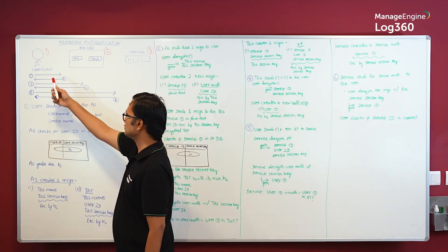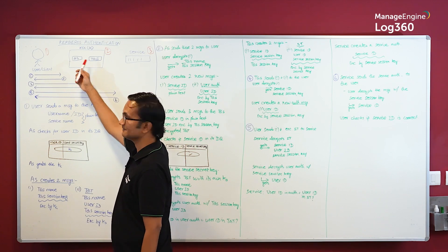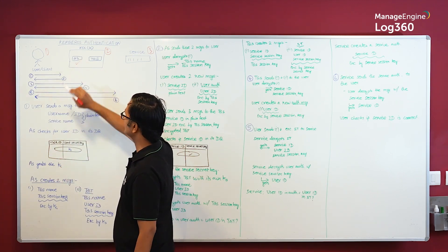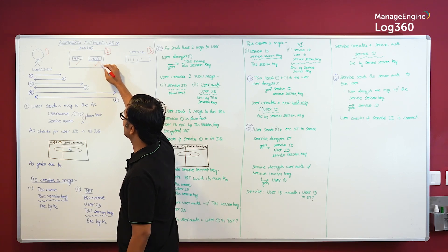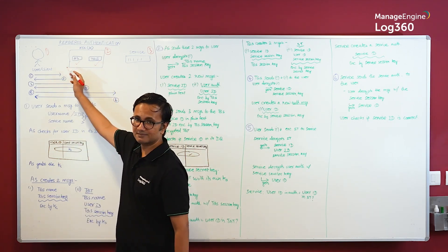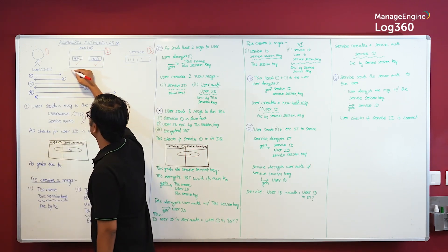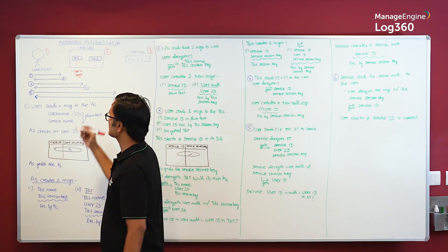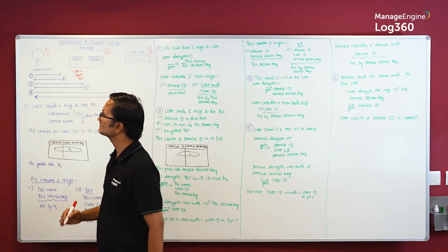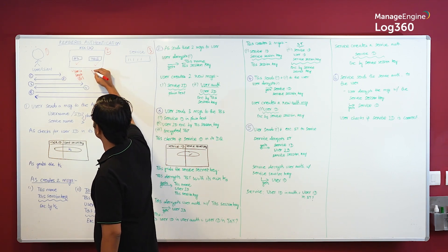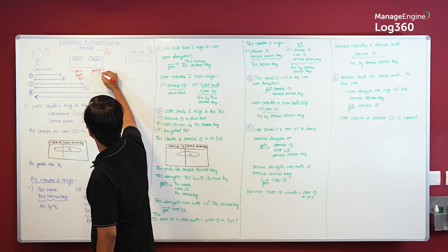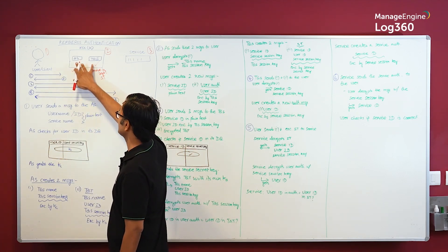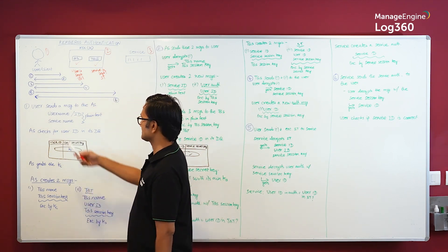The KDC itself is made up of two parts: the Authentication Server (AS) and the Ticket Granting Server (TGS). The AS checks if the user is legitimate and issues the Ticket Granting Ticket (TGT). The TGS checks if the requested service is legitimate and grants the Service Ticket.